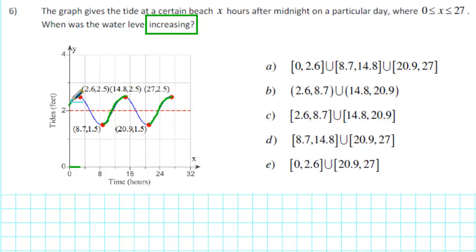The first interval in which the tide is increasing is from time equals 0 to time equals 2.6. Using interval notation, we write that as the interval from 0 to 2.6. We use brackets to include the two endpoints.